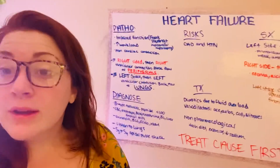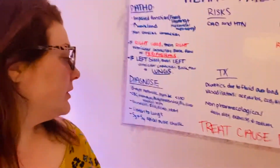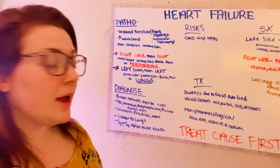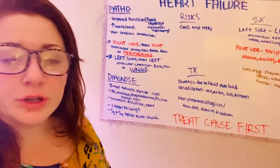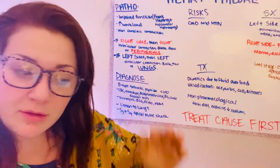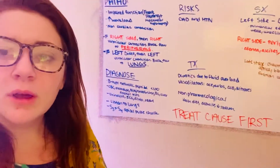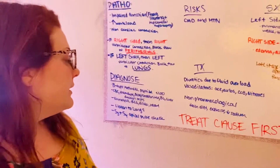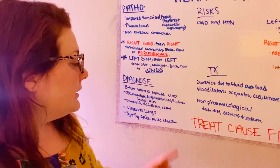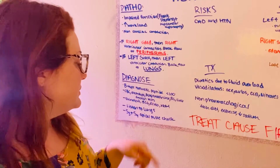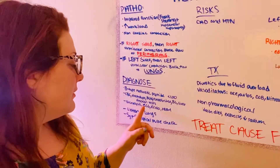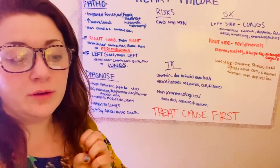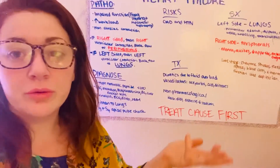So how are you going to diagnose? You're going to do a B-type natriuretic peptide (BNP) — the number should be less than 100. That's one of the biggest tests for heart failure. And then you can do a CBC, electrolytes, BUN, creatinine, blood glucose, liver function tests, urinalysis, ECG, echo, and x-ray. On x-ray, you can look to see if the heart appears enlarged.